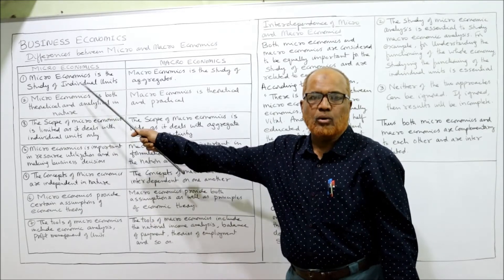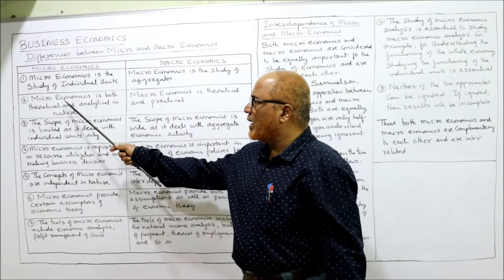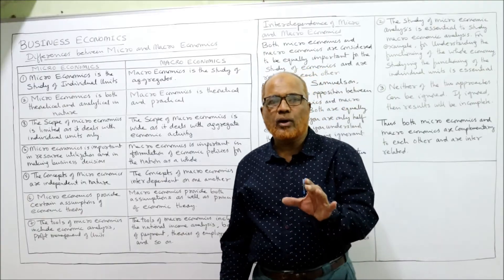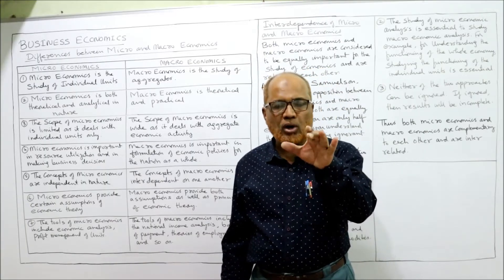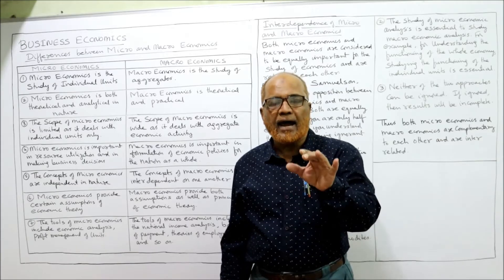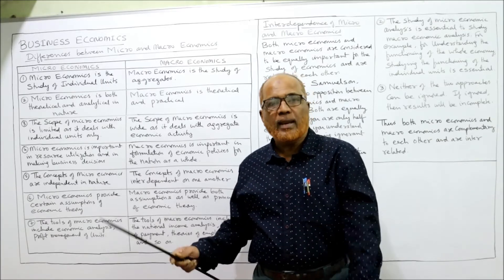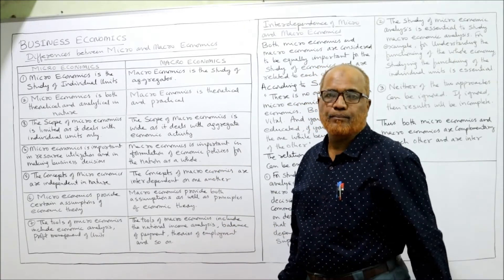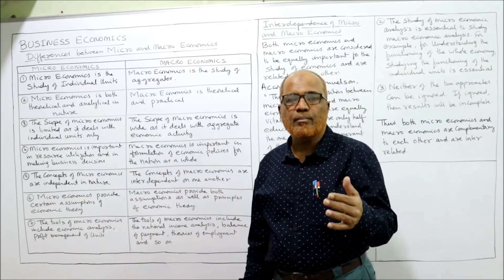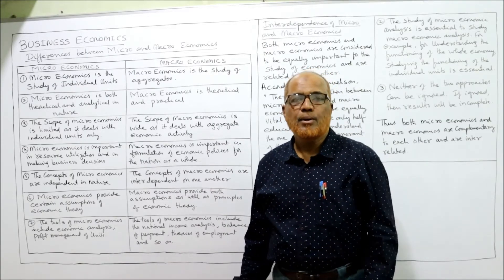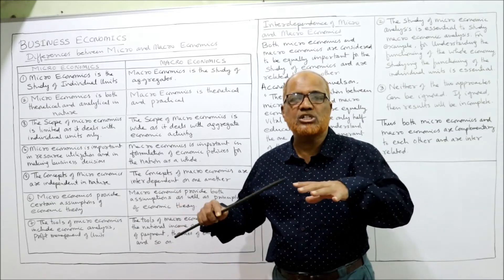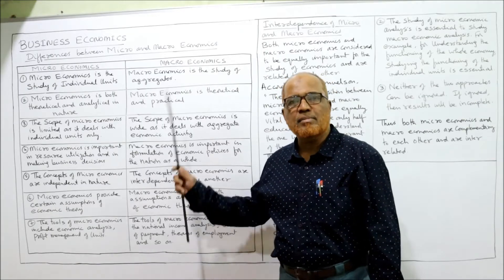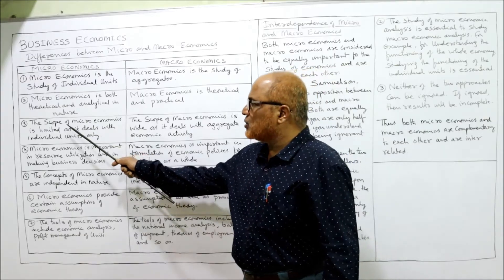Next difference: microeconomics is both theoretical and analytical in nature, as there is a lot of theory involved. Macroeconomics, on the other hand, is theoretical and more practical, because a number of nationwide policies and programs are made on the basis of aggregative study.